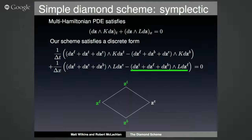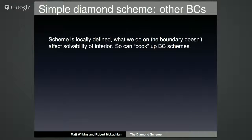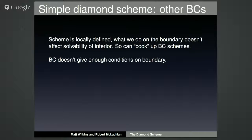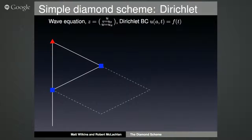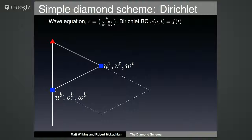The simple diamond scheme can be solved one diamond at a time, independently. This means that on the boundary we can cook up different schemes to handle different boundary conditions. Let's try dealing with non-periodic ones. For the wave equation — where u, v = u_t, and w = u_x — suppose we have a Dirichlet boundary condition on the left. We know the data at the blue squares from the previous diamond and need the solution at the red triangle.